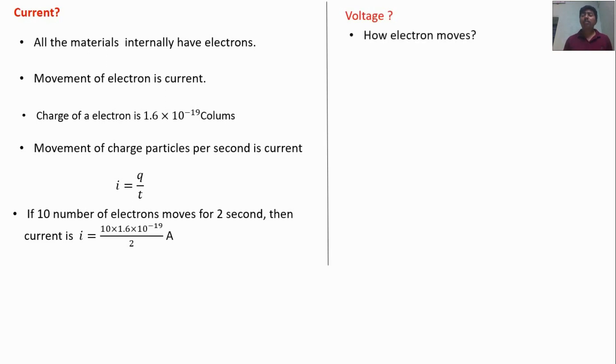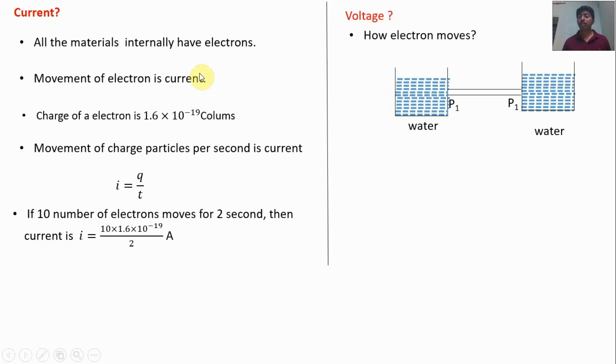Voltage. How the electron will move? For example, let's take a water tank system. If the pipeline is provided, whether the water will move? Water does not move, water particle does not move, because the pressure of both terminals are same, P1, P1. So the water doesn't move.